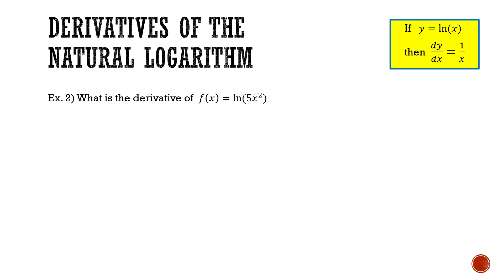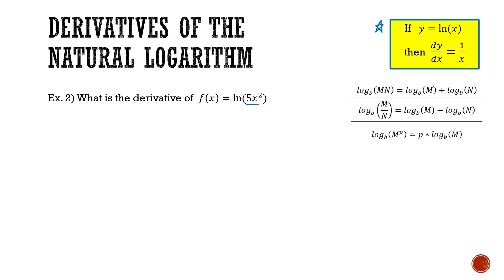Example 2: what is the derivative of f of x equals ln of 5x squared? In this expression I have ln of 5x squared, not just ln of x. So I can't directly use the derivative rule. I need to adjust this expression to the form ln of x first, and only then can I apply the derivative rule.